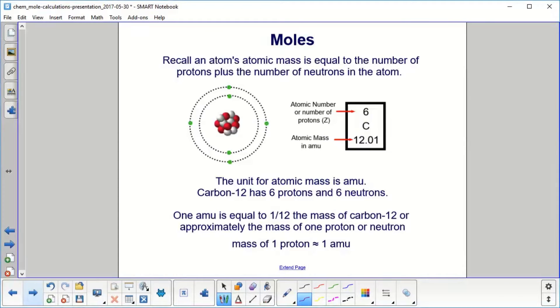Recall, an atom's atomic mass is equal to the number of protons plus the number of neutrons in the atom. When you look at periodic tables, you'll see the atomic number up here, the six, and here's the atomic mass in atomic mass units.